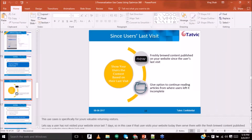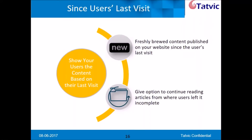Let's jump to our second use case, which also talks about returning visitors. This particular use case is more related to users who read articles on the go — for example, while commuting to the office. It might happen that somewhere in the middle of an article you have to leave it incomplete, and whenever you get free you try to find that article again to complete your reading. Sometimes it becomes difficult to find that article and get back to where you left off.